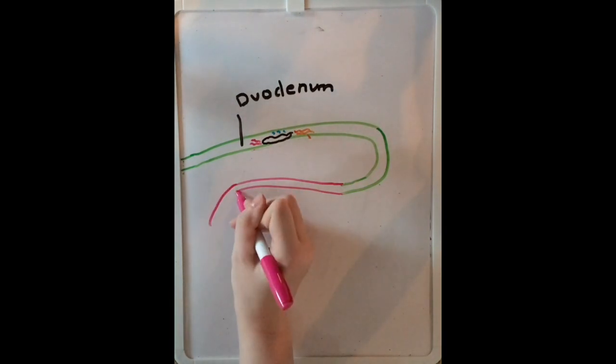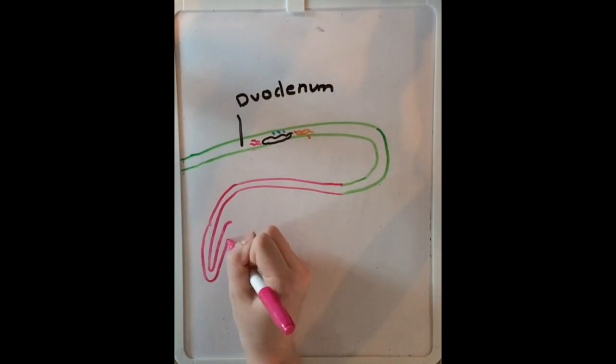Next you will see the middle part of the small intestine being drawn out, the jejunum, as well as the end part of the small intestine called the ileum.